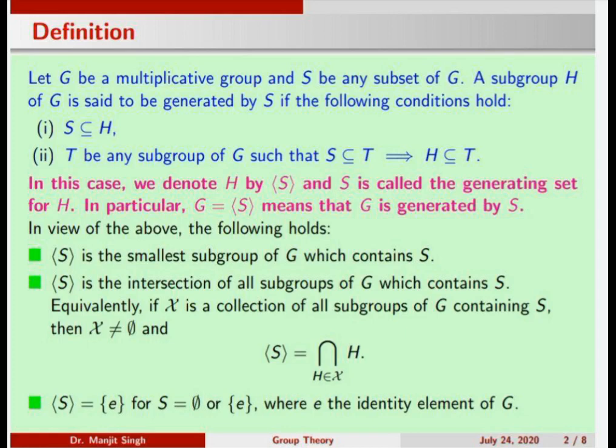In this case we say S is a generating set and H is generated by S. If some subset of G generates G, then we say G is generated by S and S is the generating set. The subgroup generated by S is the smallest subgroup of G containing S, and it is also the intersection of all subgroups of G which contain S. One can show that all three statements are equivalent.